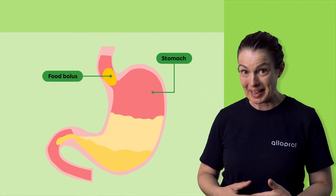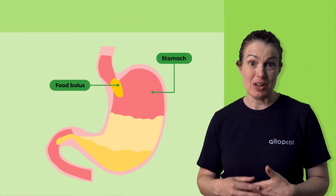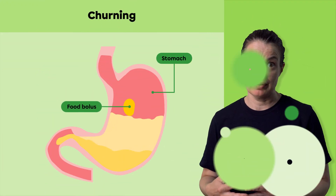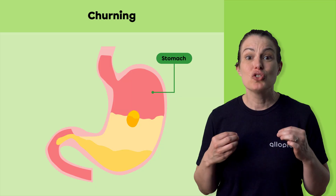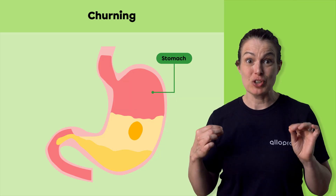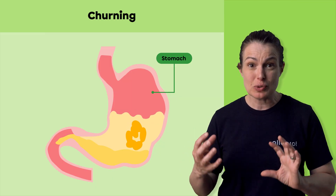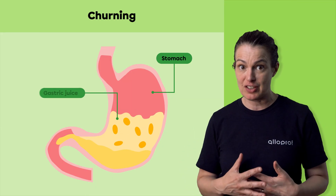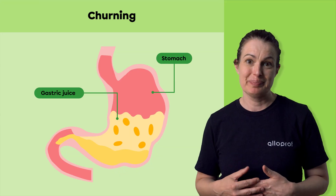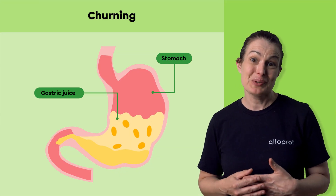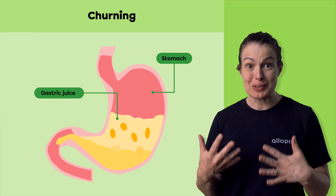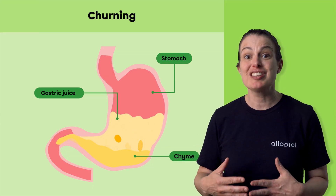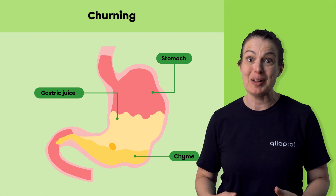Once in the stomach, the food bolus undergoes a process of churning. Churning consists of contractions of the stomach walls that squeeze the contents and mix it with gastric juice. The stirring results in a slurry called the chyme, which is then directed to the small intestine.